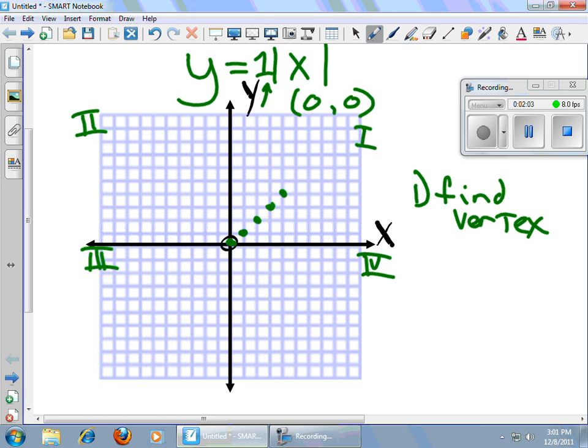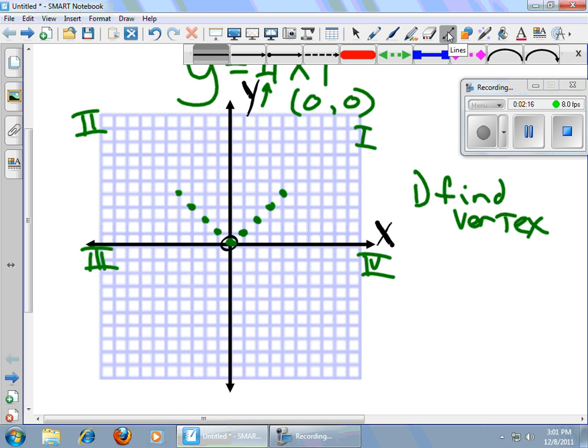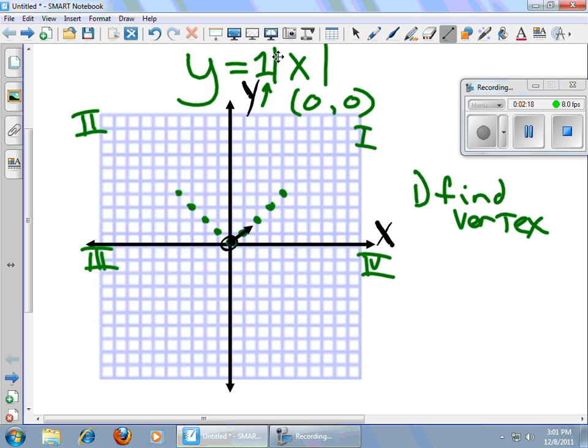This is the first quadrant, second quadrant, third quadrant, and this is the fourth quadrant. For this one, I rise 1 and go back 1, rise 1, go back 1, rise 1, go back 1, rise 1, go back 1. The line must be symmetrical, or the V must be symmetrical.